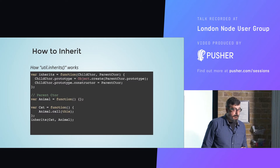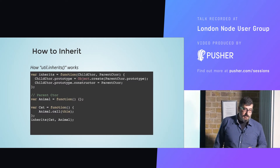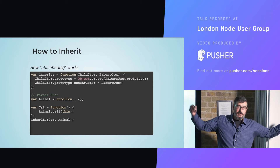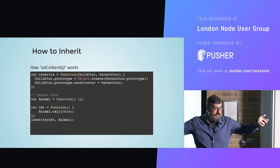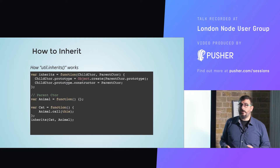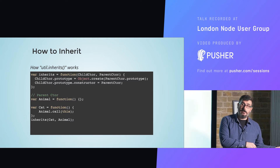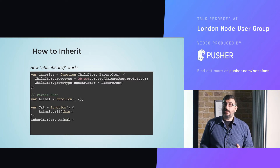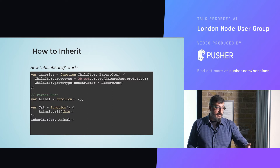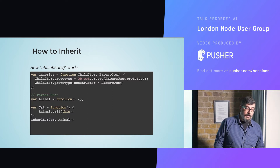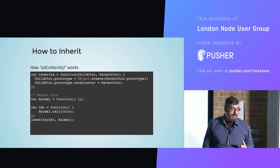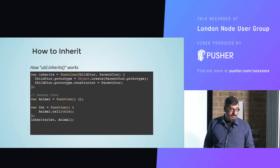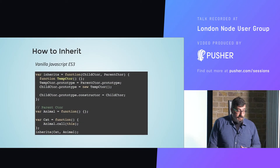What does inheritance actually do? I'm breaking out this function — it's basically two lines of code. We have the child constructor and the parent constructor from which we are going to inherit. What we need to do is copy the prototype of the parent to the child. In ES5 this happens using the Object.create method, which creates a new object based on a source object we provide. Then we point the constructor to the parent to establish the chain of inheritance.